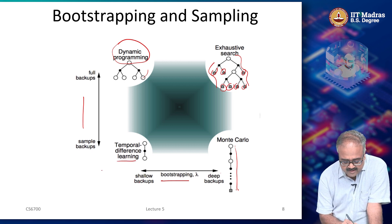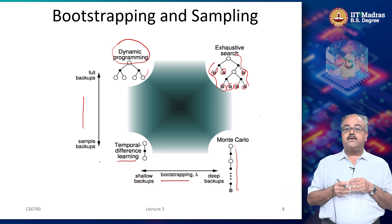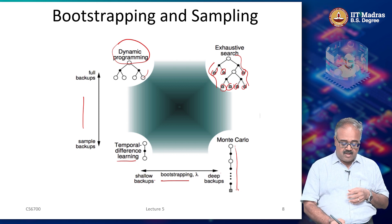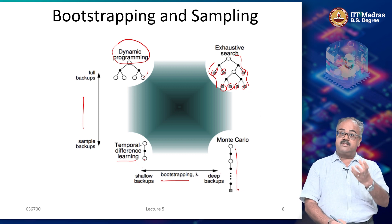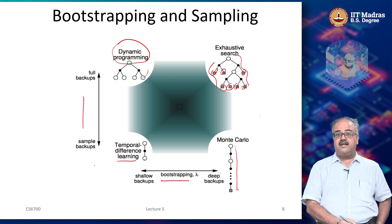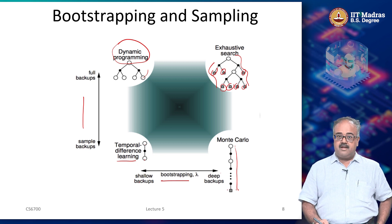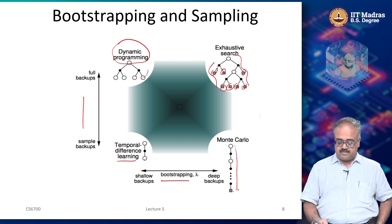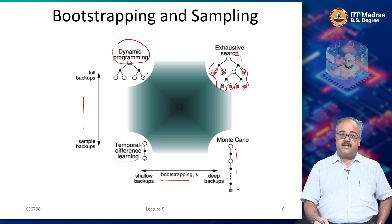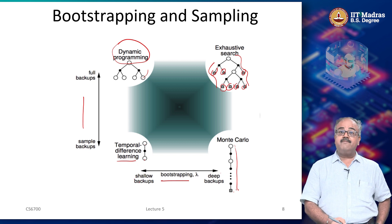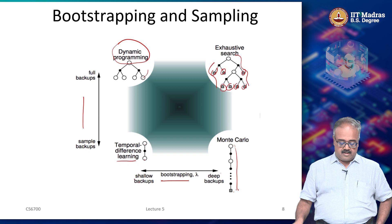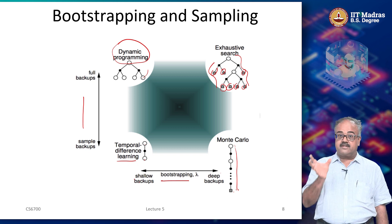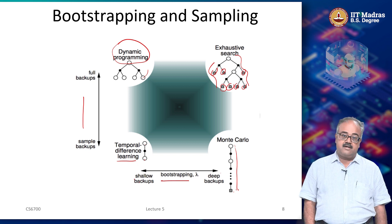At the other corner is temporal difference learning — TD learning — which we will now start looking at. TD bootstraps heavily just like dynamic programming, looking ahead one step and using the value of the state there. And it also samples heavily like Monte Carlo, taking one possible path through the MDP — just one transition, one step. That is basically what temporal difference learning is: it combines the advantage of bootstrapping with sampling.